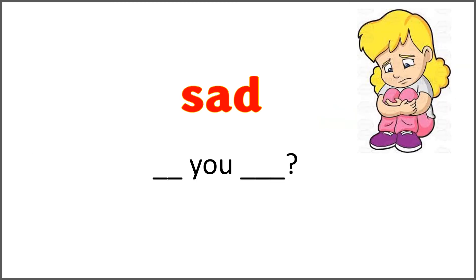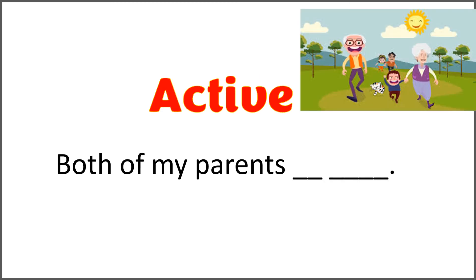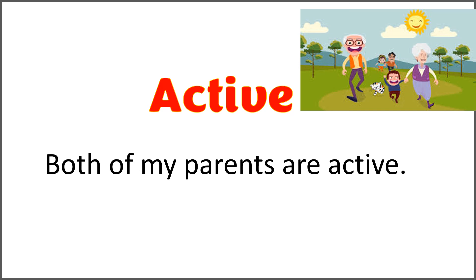The given word is 'sad,' and the sentence is 'are you blank?' Use the word 'sad' with 'are' to ask this question. Are you sad? Oh, what happened? Why are you so sad? The given word is 'active.' Both of my parents blank blank. Use the word 'active' with 'are' to complete this sentence. Both of my parents are active. That's nice — what is the secret? I would like to know.